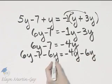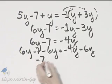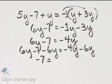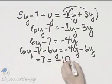What happens on the left side? The 6Y subtracts out, and I have, be careful, it's negative 7 is equal to negative 4Y minus 6Y, that's negative 10Y.